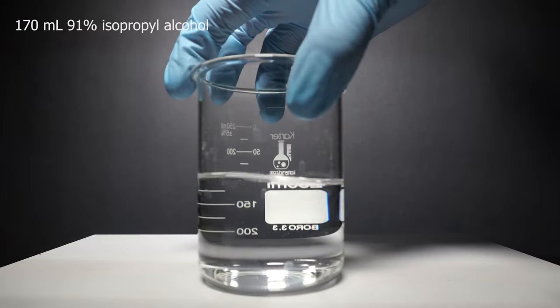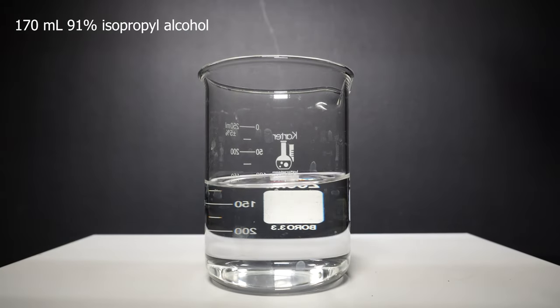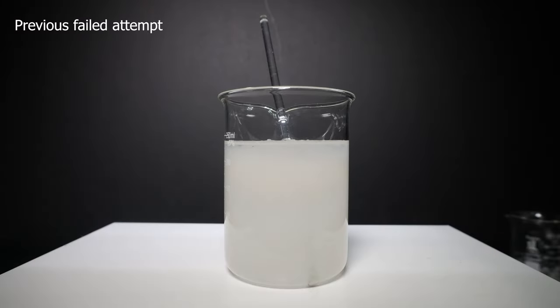Next we'll pour about 170 milliliters of isopropyl alcohol into a beaker. I'm using 91% isopropyl alcohol which means there is 9% water. This ratio is really important because if you use too much water the jelly will not form as well as you would like.